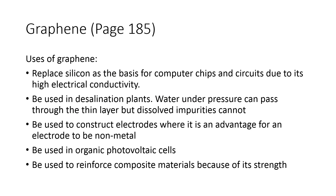Uses of graphene include: replacing silicon as the basis of computer chips and circuits due to high electrical conductivity; use in desalination plants where water under pressure can pass through the thin layer; use in organic photovoltaic cells; and use to reinforce composite materials. These applications require good electrical conductivity, which graphene provides due to its high tensile strength and ductility, allowing it to be formed into wires.